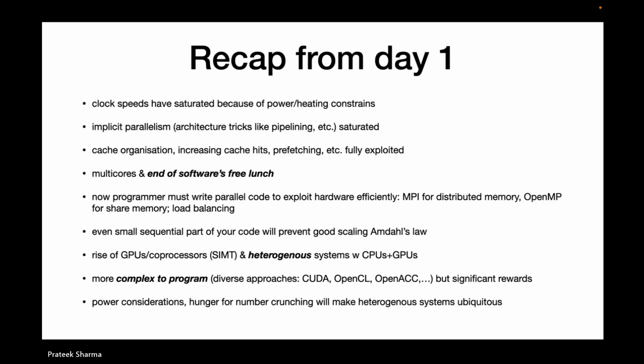The other issue is power consumption. The biggest supercomputers need a power plant locally to supply power. That's true here also at Param Pravega — we have a local power supply that produces power just for that. Basically, power constraints and hunger for more number-crunching will make heterogeneous systems universal. All systems will be heterogeneous with CPUs and GPUs or accelerators of some sort.